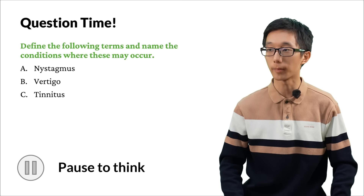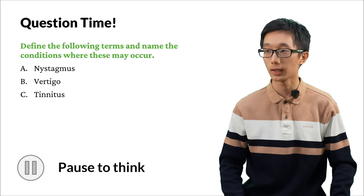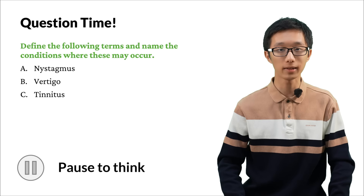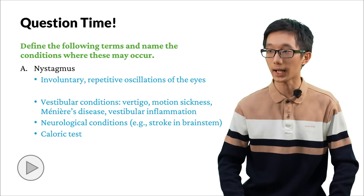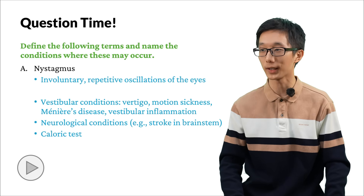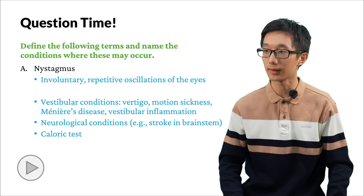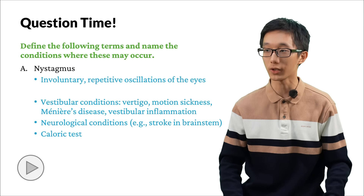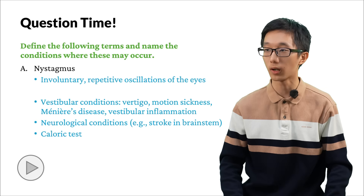A final recap for the pathology: please define the following terms and try to list the conditions where they may occur — A: nystagmus, B: vertigo, and C: tinnitus. For nystagmus, it is defined as the involuntary, repetitive oscillations of the eyes. It may occur in vestibular conditions involving vertigo, motion sickness, Meniere's disease, and vestibular inflammation. It may also be caused by neurological conditions — strokes in the brainstem, especially in nuclei related to the vestibular system, may also cause nystagmus. And of course, the caloric test.